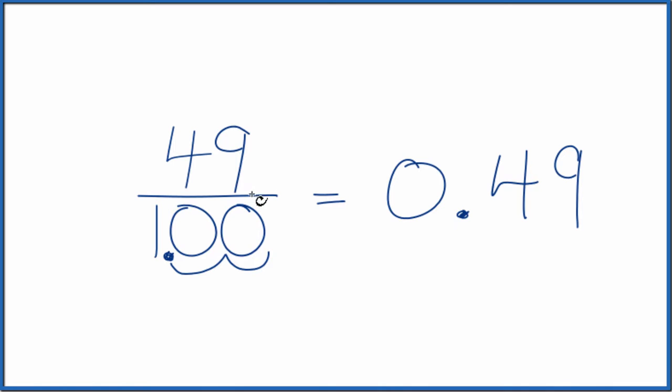We still have to do that to the numerator as well, so one, two, and what we end up with is 0.49 over 1.